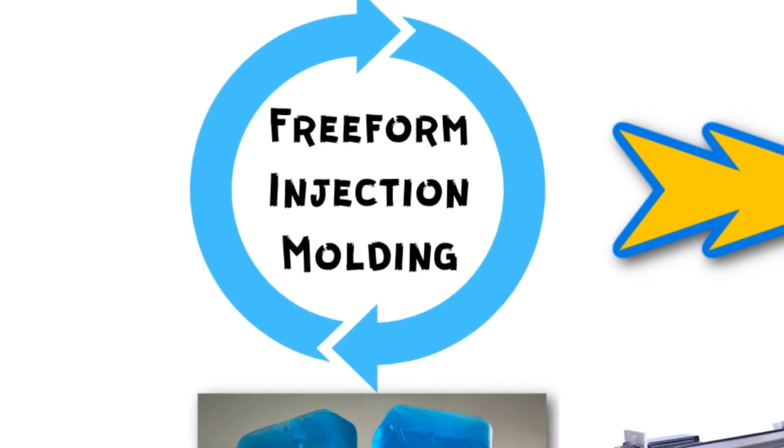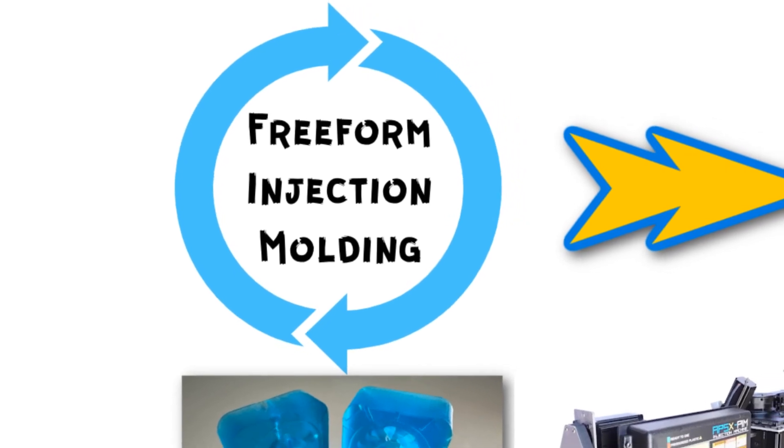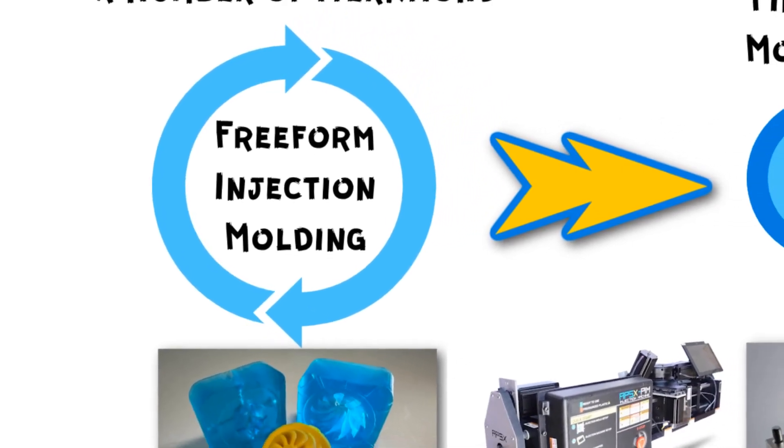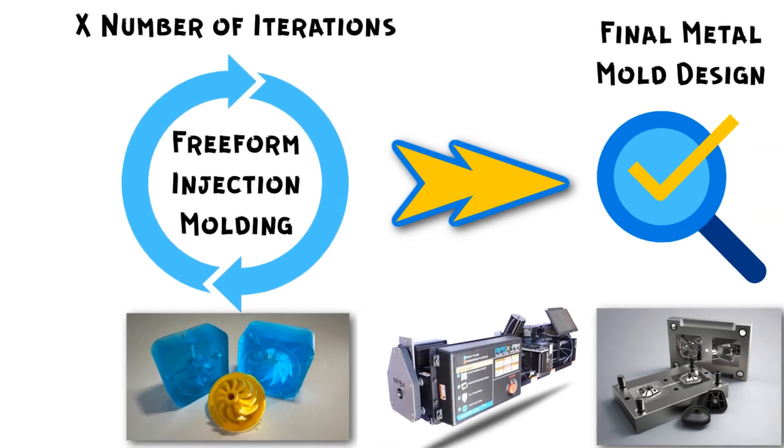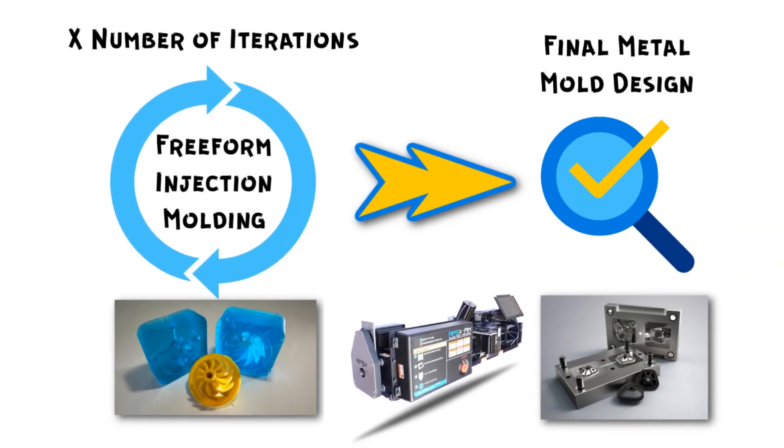With Freeform Injection Molding, you can cut the cost and time significantly and make multiple iterations until you find your sweet spot. Then you can make the metal mold as your final step before production with 100% confidence.